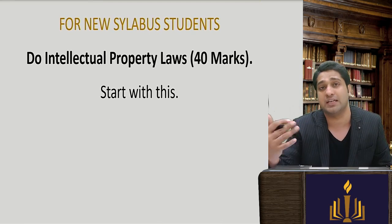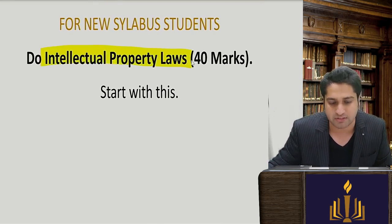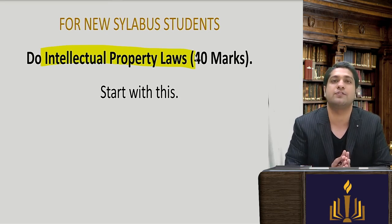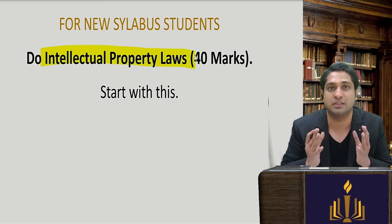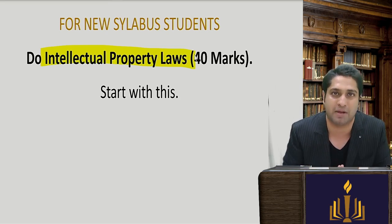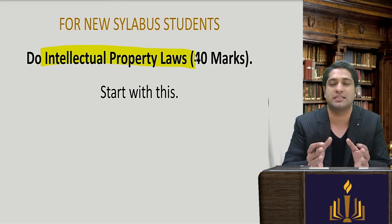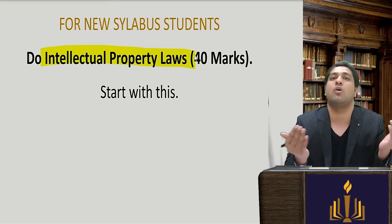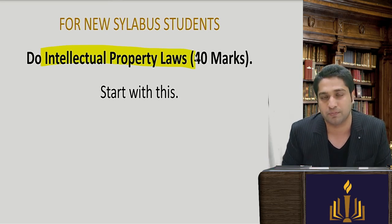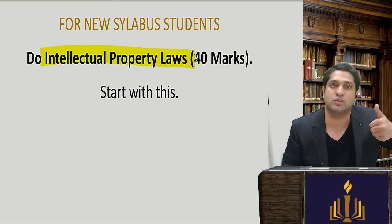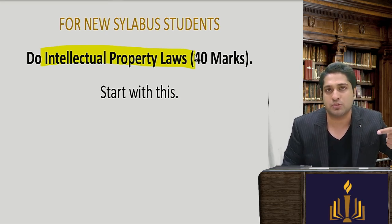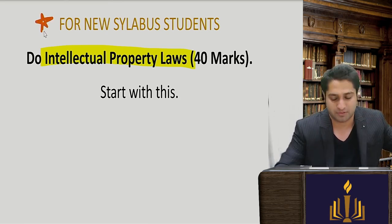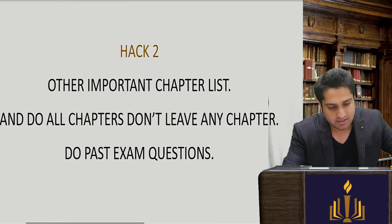For new syllabus students, there is one more hack: they have added Part B, which is IPR — Intellectual Property Rights — for 40 marks. This 40 marks is given on a platter to you. Complete it thoroughly. Your Competition Act is also a high-weighted chapter. If you do these two, you are almost clearing your paper. Hack one is: Competition Act is a super important chapter, and for new syllabus students, complete Part B which is 40 marks, in depth.